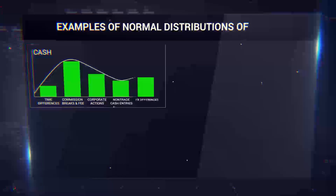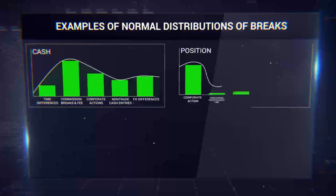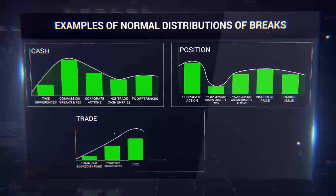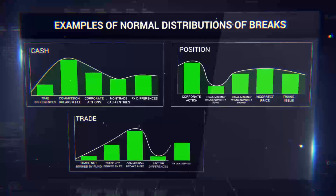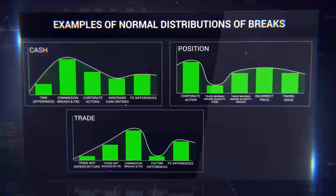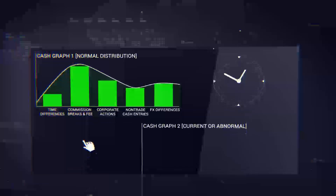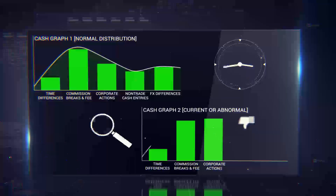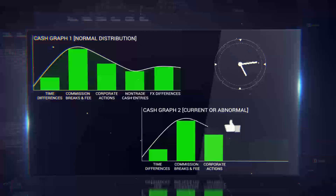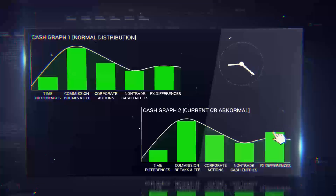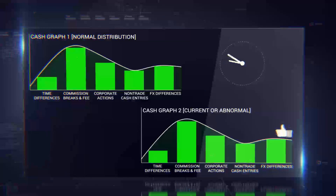Robust break reporting guides an experienced team by permitting comparisons to normal distributions of cash, position, and trade break triggers. Permanent improvements that address trigger patterns can lead to normal distributions of cash, position, and trade break triggers, and thus exponential leaps in efficiency.